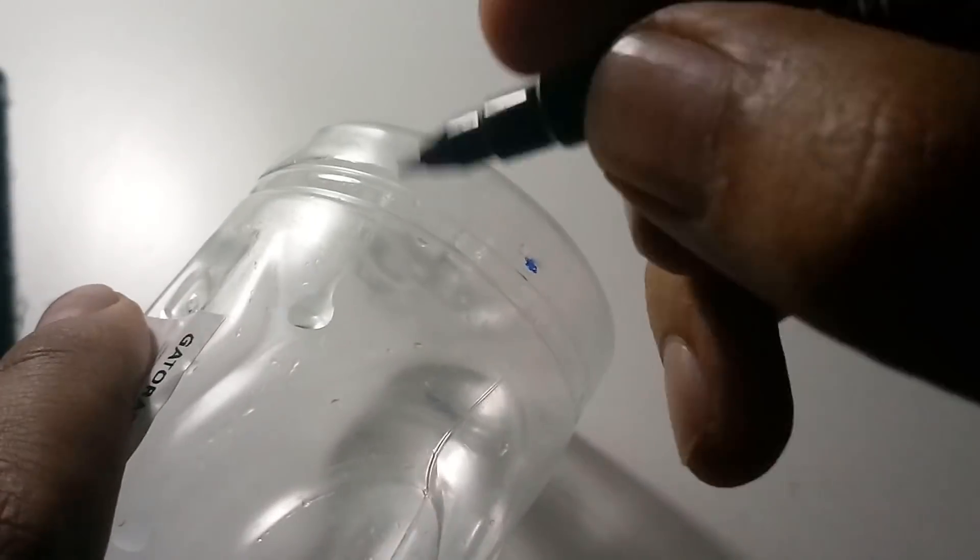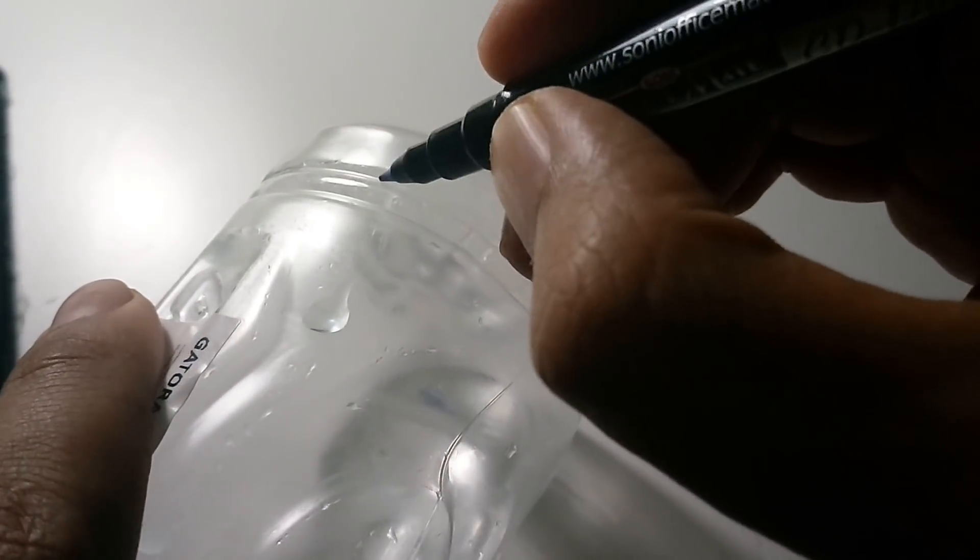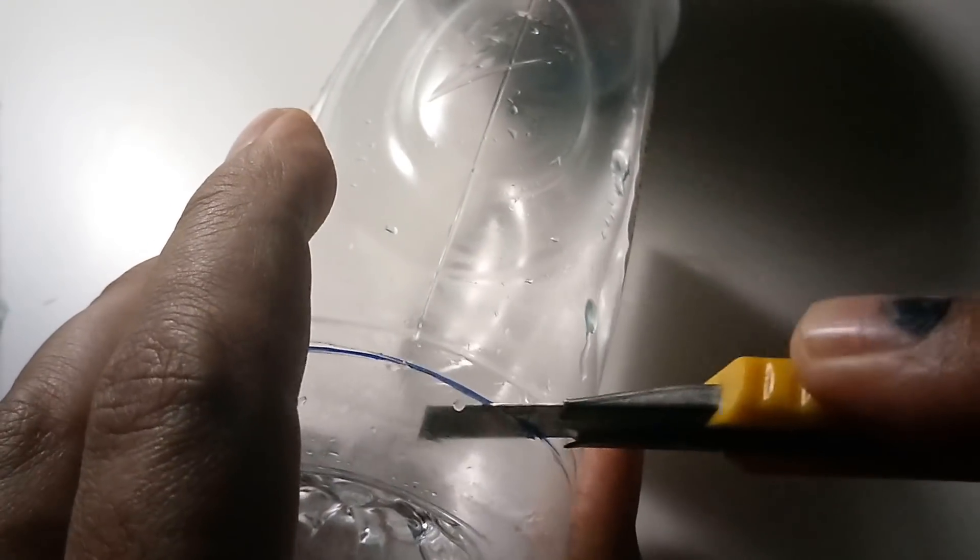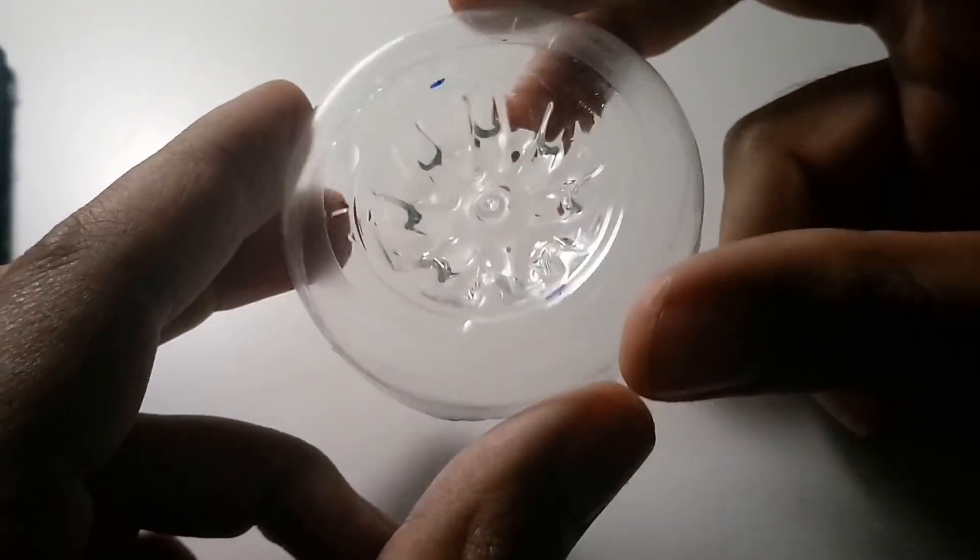Before you cut, make sure you mark the edge with a pen in order to not go astray. After cutting the marked perimeter, the bottle base is already looking like an arc reactor.